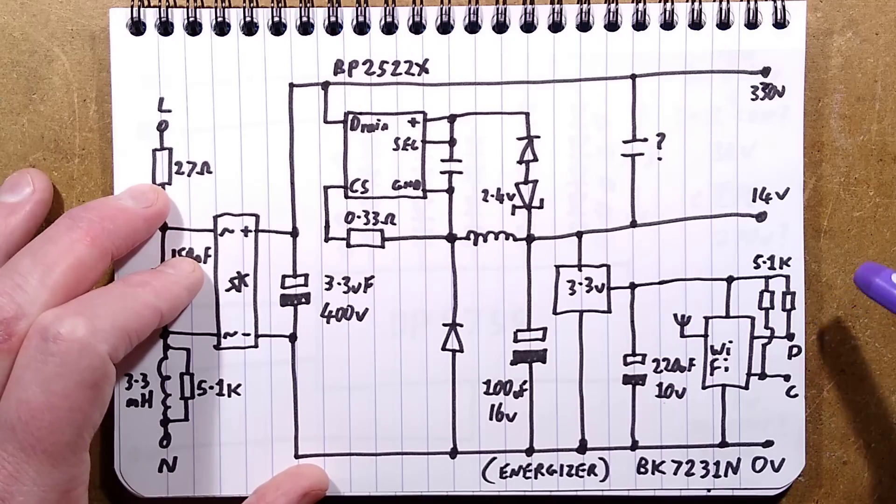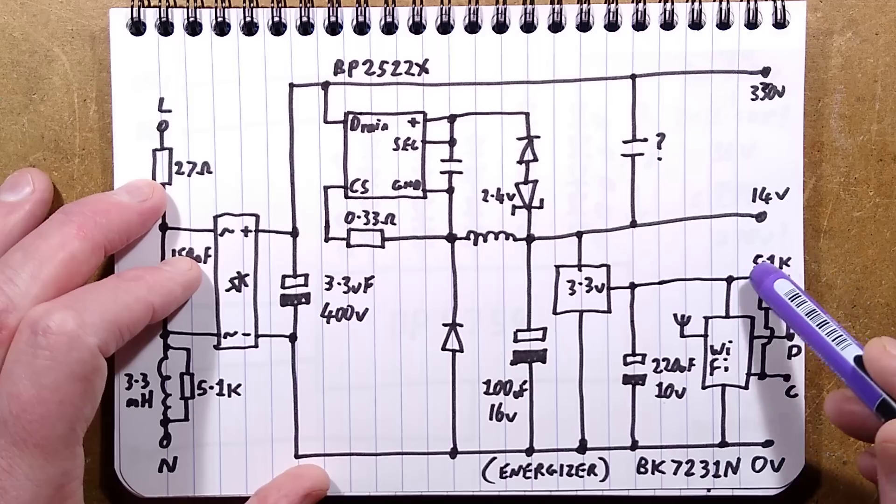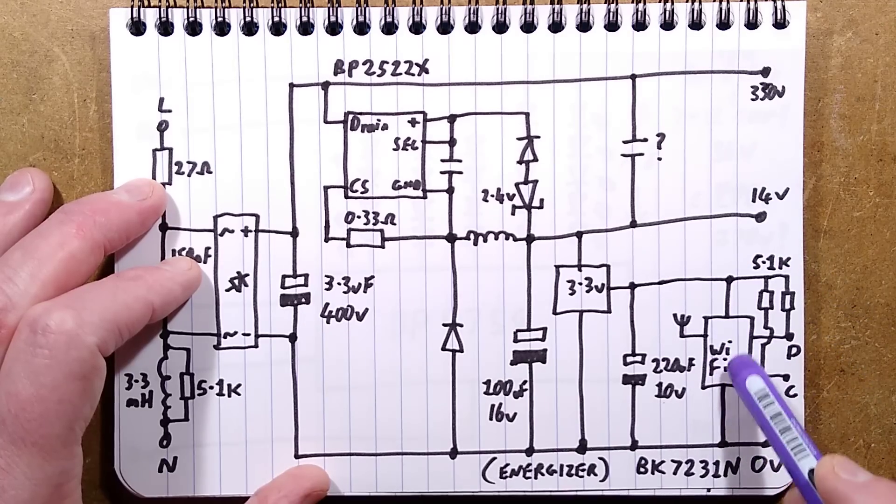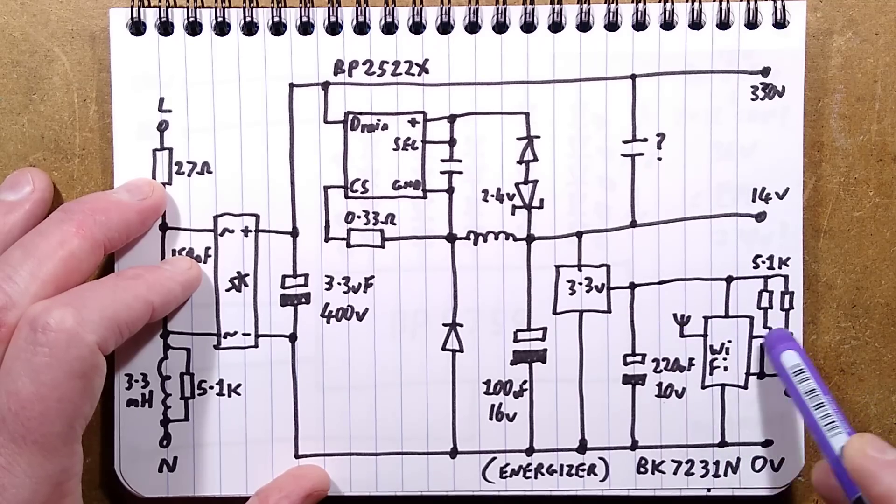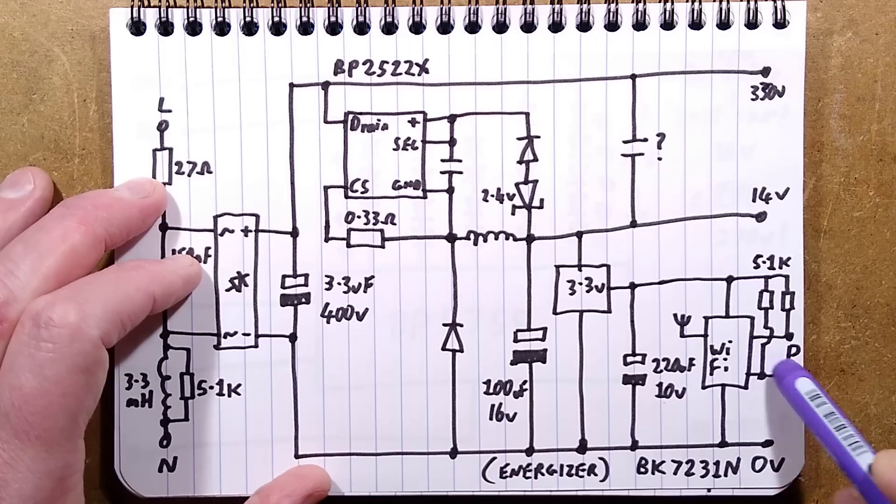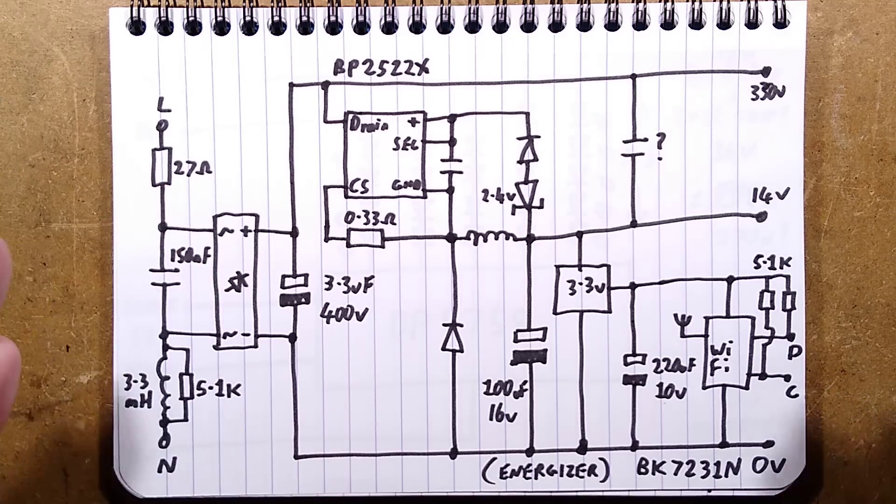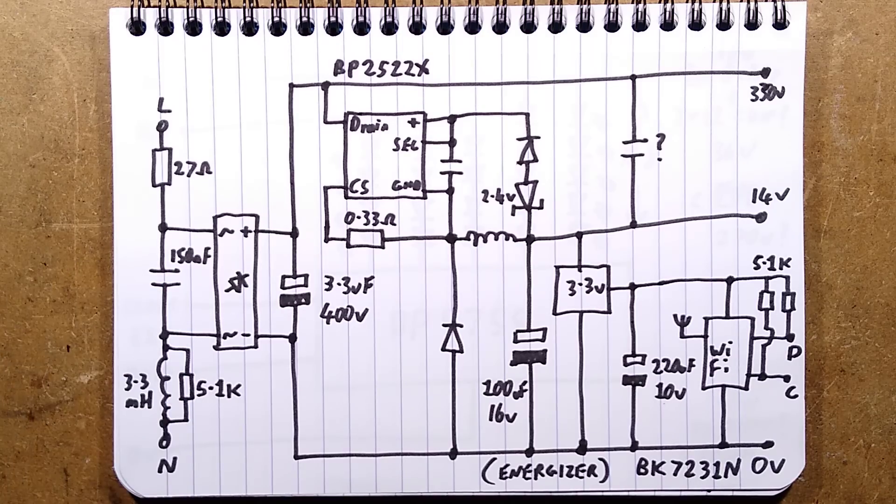The 3.3 volt supply has two 5.1k pull-up resistors to data and clock from the Wi-Fi module. That's all - antenna, data, and clock, just five connections. The data and clock is I2C communication, a very standard two-wire communication system used on circuit boards for communicating between chips.